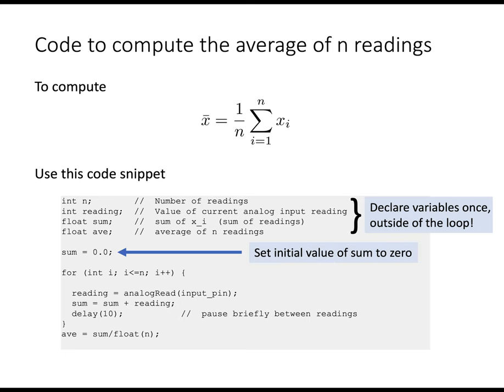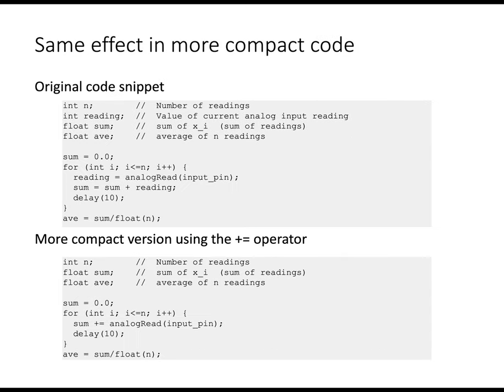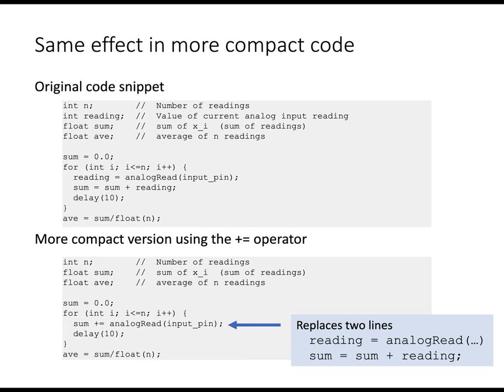Inside that sequence of statements, of course, we still need to set sum equal to zero before we start the loop. And then we add to it every time we go through the loop. We're going to make the code a little more compact with the plus equals operator. The upper box is the same code as before. The lower box shows how the plus equal operator allows us to eliminate storing the intermediate results in reading. We simply say sum plus equals analog read, which is equivalent to sum equals sum plus reading.